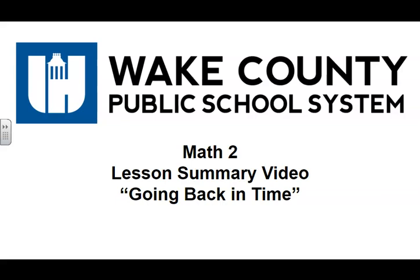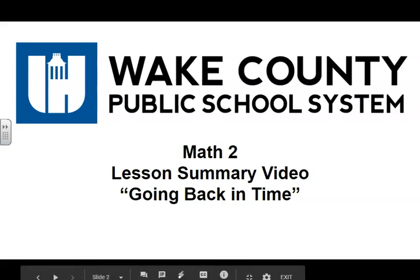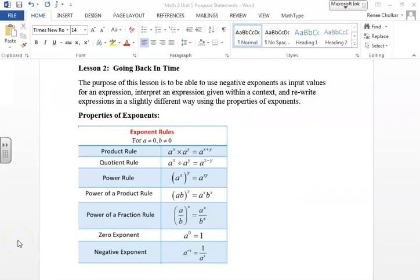This is the Math 2 lesson summary video for the lesson entitled 'Going Back in Time,' the second lesson in Unit 5. The purpose of this lesson is for students to be able to use negative exponents as input values for an expression, interpret an expression given within a context, and rewrite expressions using the properties of exponents.